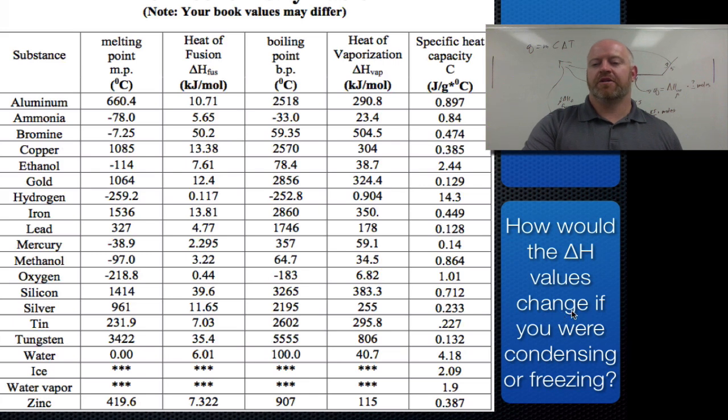Now, we already talked about this, but how will these values change if we're condensing or freezing? Remember, these values would become negative instead on this table. This table also includes specific heat capacities for you. So if you're doing a problem with this, you have all those values on there.